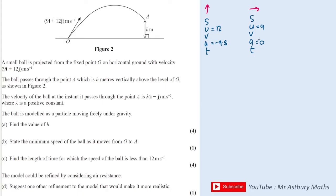Here's the key point: because there's no acceleration in the horizontal, it means that the velocity in the horizontal will remain constant - it will remain at 9 throughout the whole flight. So when we're at point A and we're told the velocity is λi - j, we know that λ must equal 9 because the horizontal component is always going to be 9. That means the vertical component at A is minus 9.